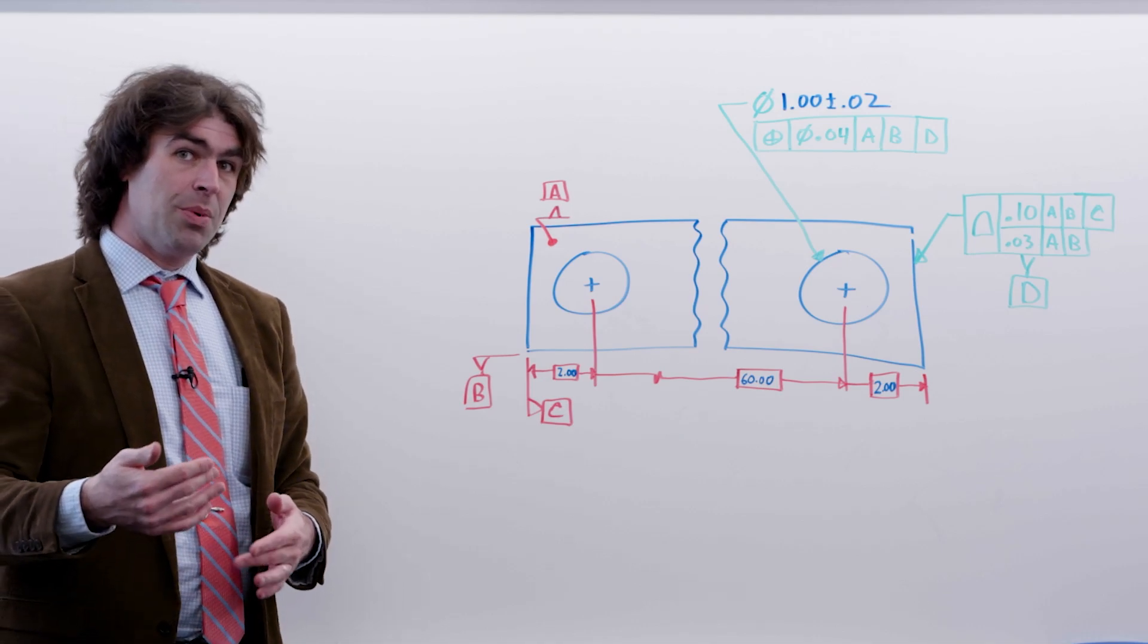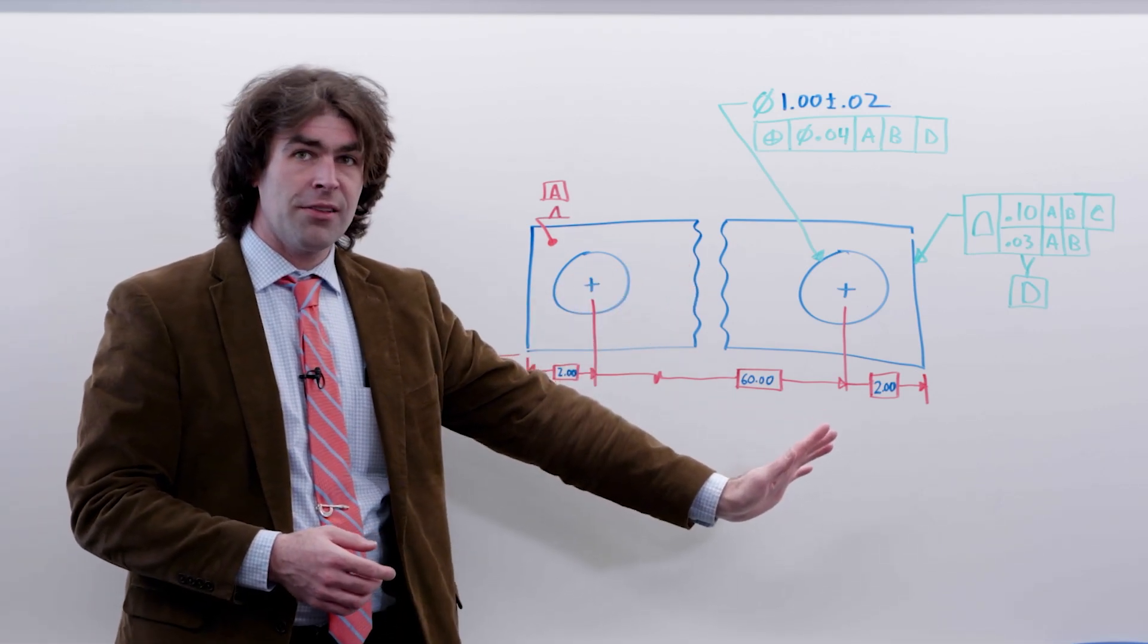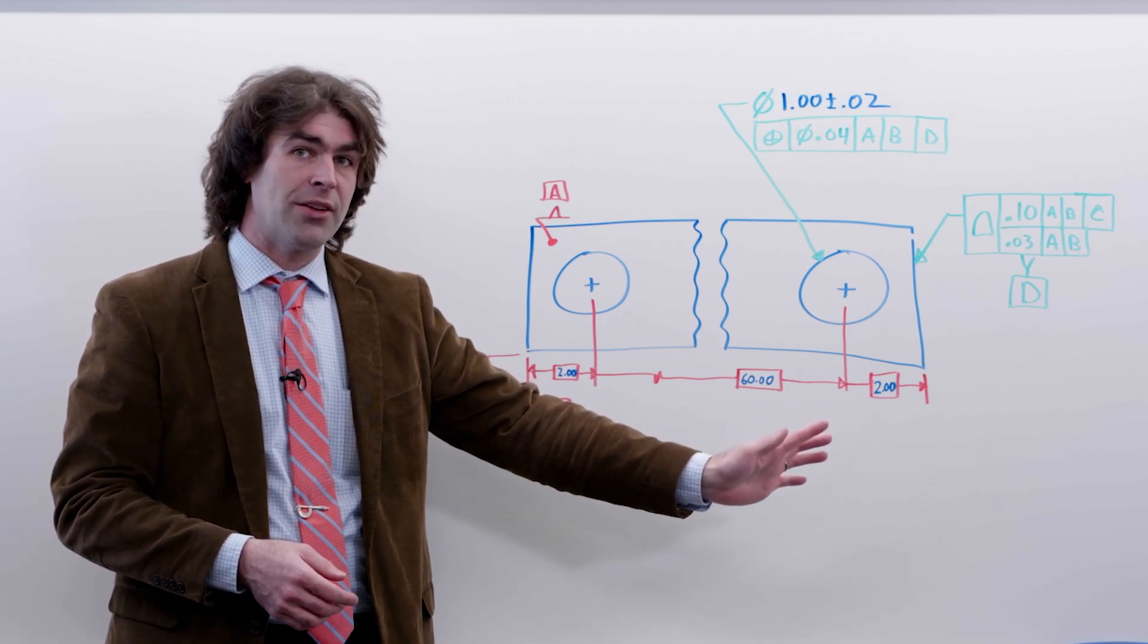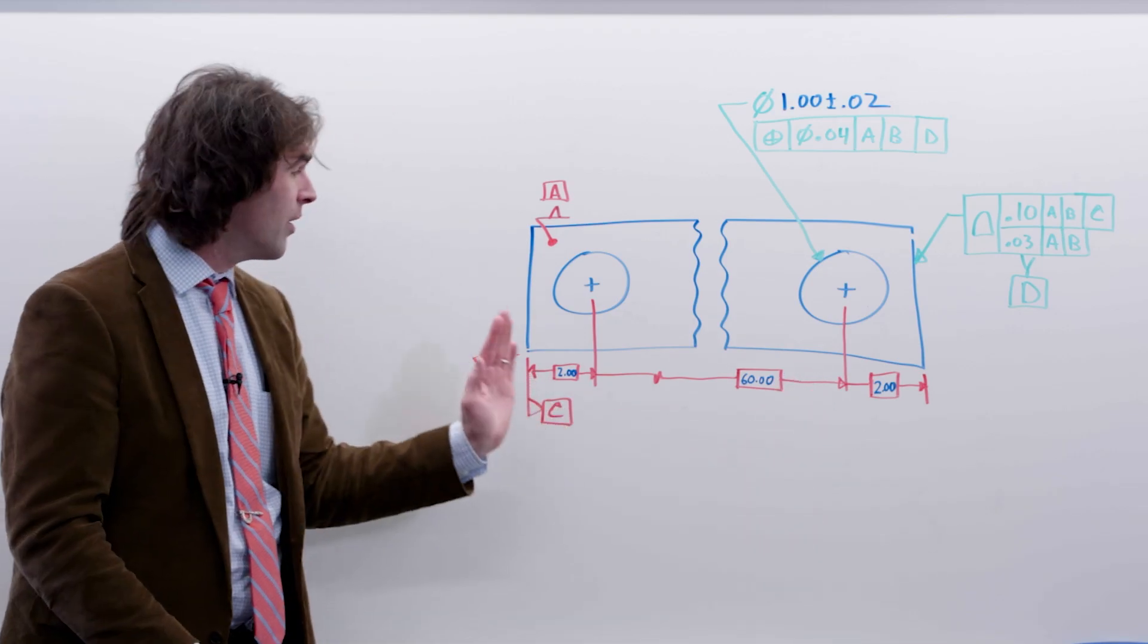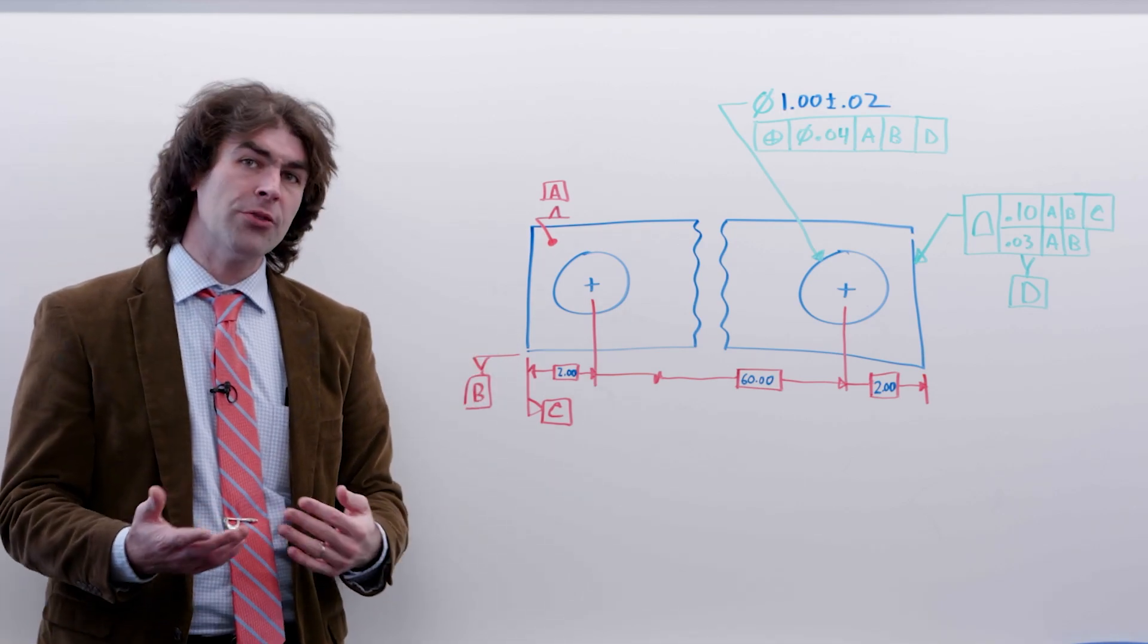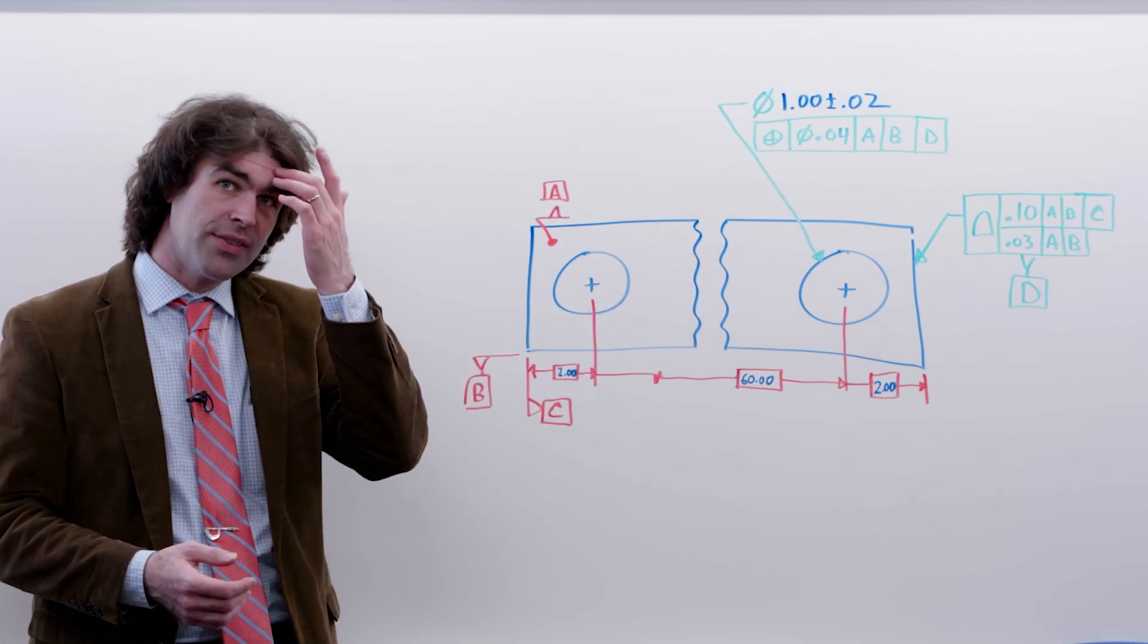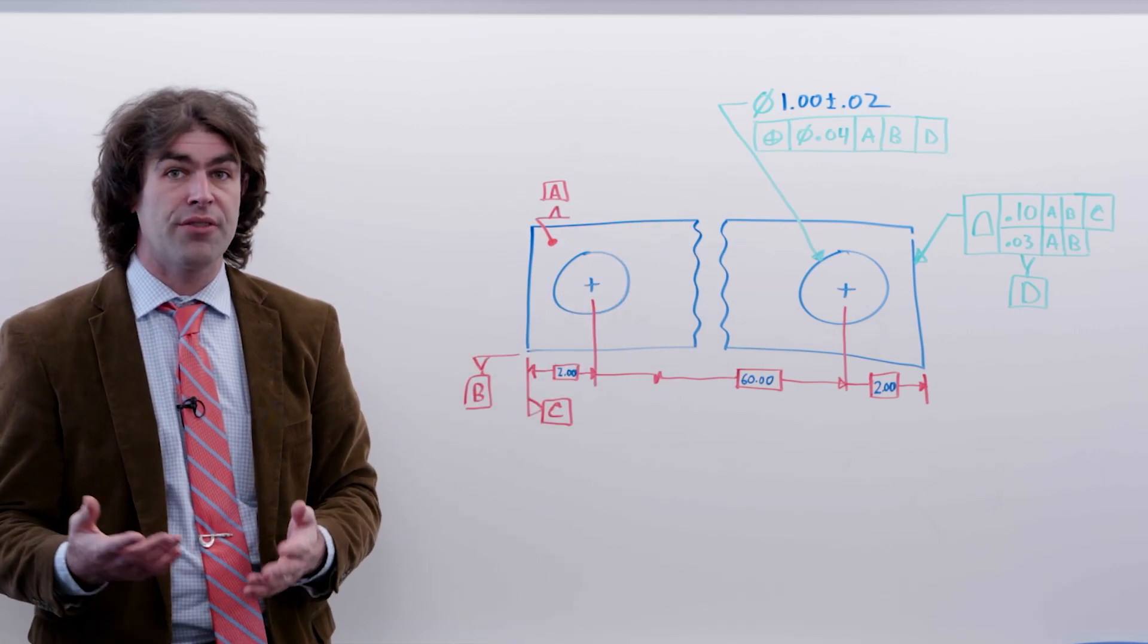The problem with using A, B, and C on the other hole is that you've got to span this large distance to accurately measure the position of the hole from way over here. Now, depends what the position is, but let's say we pick a position of 40 thousandths, that could be difficult to verify.